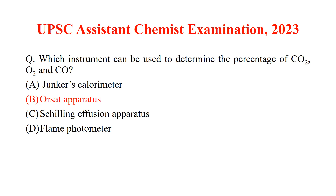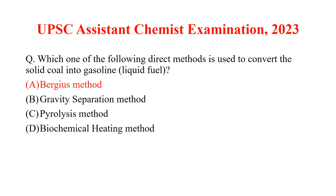If you observe in the question paper, you would have guessed two questions easily — they asked the same question in two ways. The next question: which one of the following direct methods is used to convert solid coal into gasoline? Solid coal can be converted into liquid fuel in two ways: direct liquefaction and indirect liquefaction. The answer is the Berges method, which is a direct liquefaction of coal. In this process, carbon is heated in the presence of hydrogen and converted into gasoline.